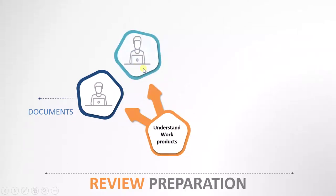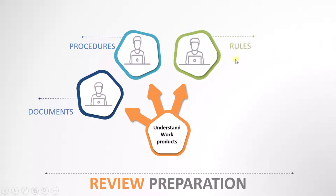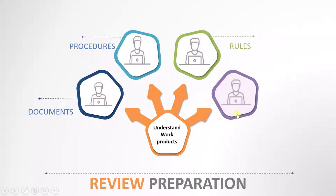The second thing is the procedures. What are the different procedures? What documents have to be updated in order to implement these requirements — those things have to be considered by the reviewer. Then, what are the different rules, and after completing the review, who will take care of what and what are the reviewer's responsibilities — all these things he has to understand. There is also a possibility that some checklist is provided to the reviewer, and he has to understand those checklists as well.